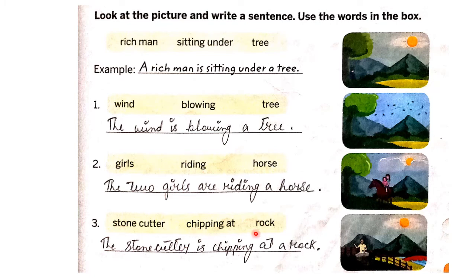Third: stonecutter chipping at rock. You see the stonecutter here, and what is he doing? He is chipping at a rock. So the sentence will be: The stonecutter is chipping at a rock. This is the creative writing, or we can say story writing with pictures.